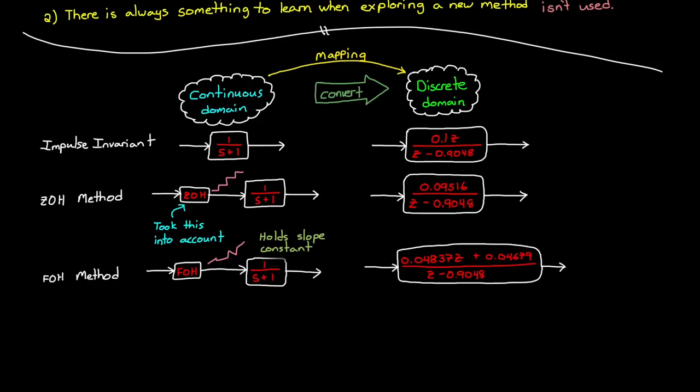Now, here's the thing. All three of these methods have the exact same claim to fame. They produce discrete systems that behave a specific way in the time domain. That is, they produce an accurate impulse response, an accurate step response, or an accurate ramp response. All time domain responses.